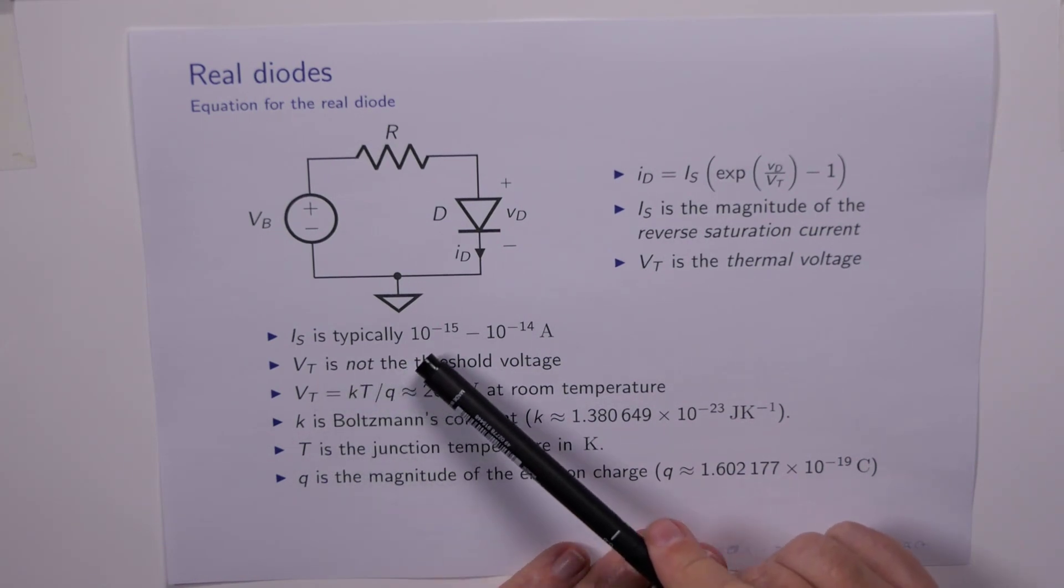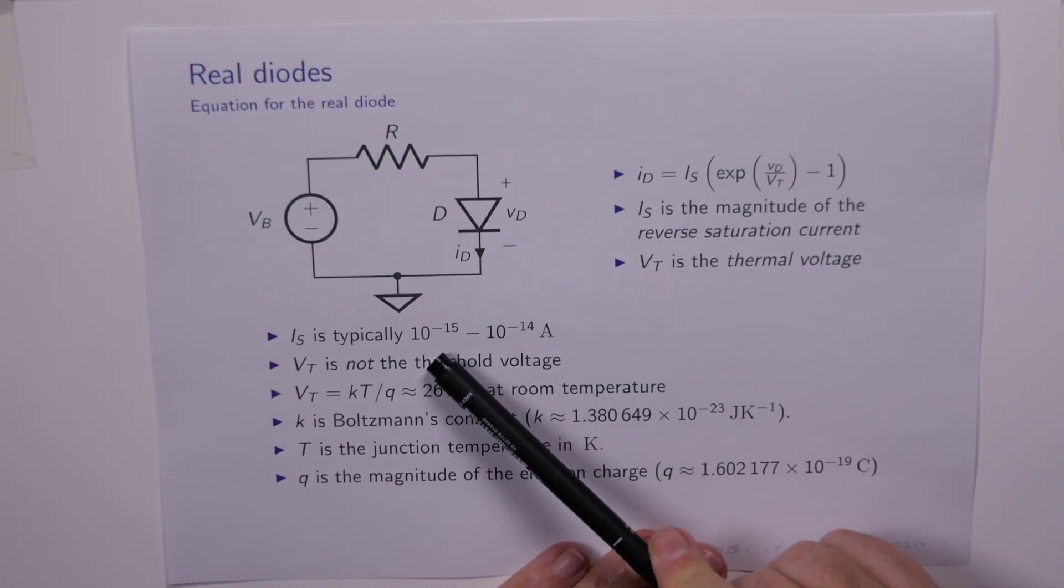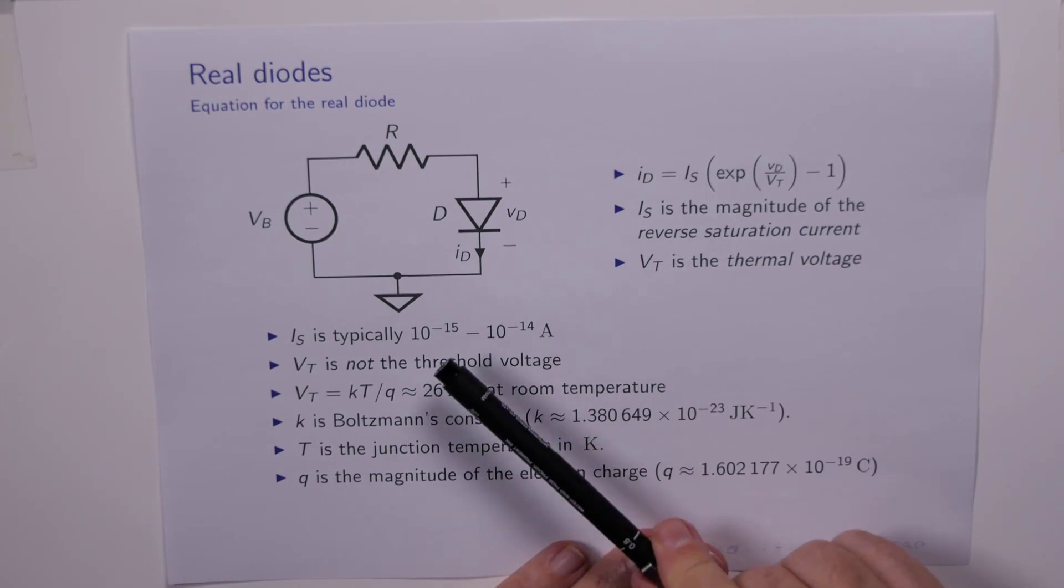Now, Is is typically 10 to the minus 15 to 10 to the minus 14, which is significantly smaller than the value of Is I showed in my graph, which was about 1 nanoamp. That 1 nanoamp comes about largely through parasitic effects. This value of Is is a theoretical value, which if we had a perfect crystal lattice, this is the value that results. In practice, the value is significantly higher, a million times larger, because of imperfections and the reverse saturation current doesn't just flow in the reverse direction through the PN junction, but can essentially flow in the bulk material that the diode is made from.